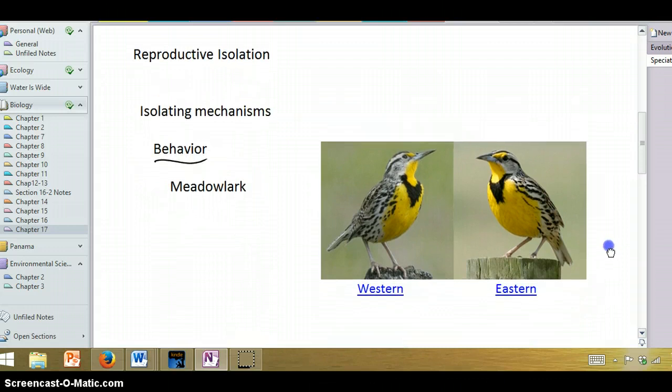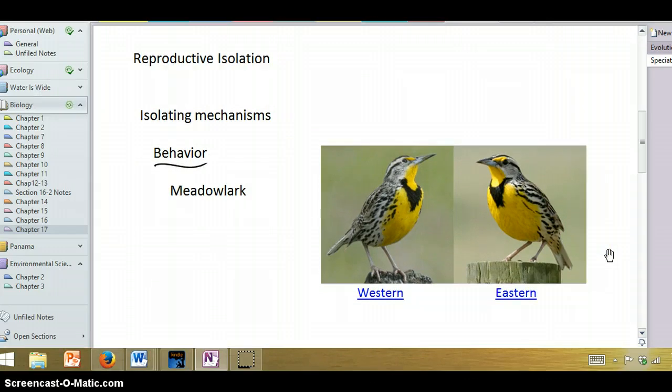A good example we're often given is meadowlarks. You look at these two meadowlarks, and you can see they look pretty much the same, not a whole lot of difference between them, at least by their physical phenotype, but they have somewhat different behaviors. Even though one is the western meadowlark and one is the eastern, they do have an overlapping range, but even within that overlapping range, they don't interact with each other or breed with each other.